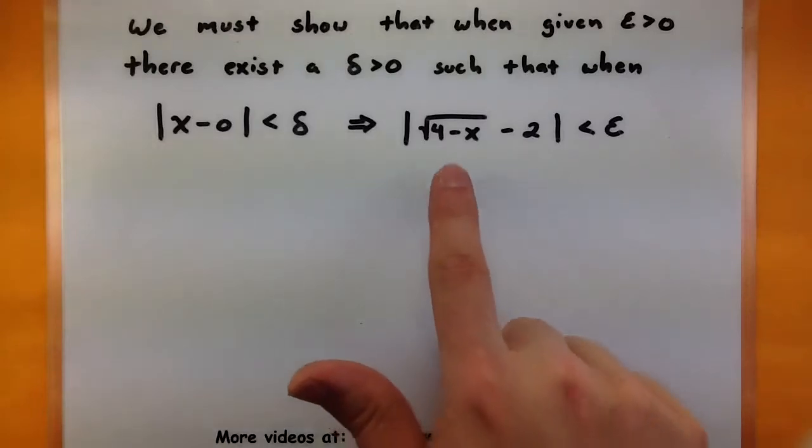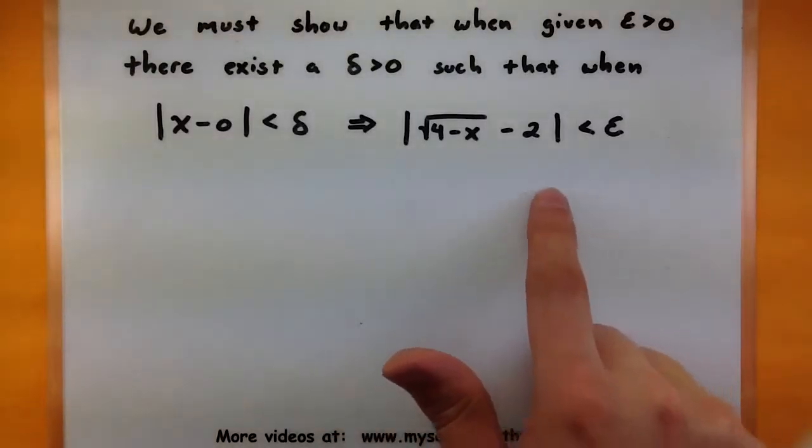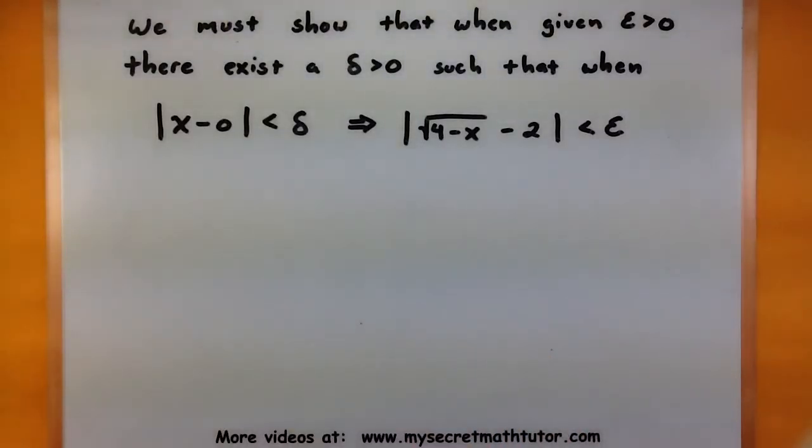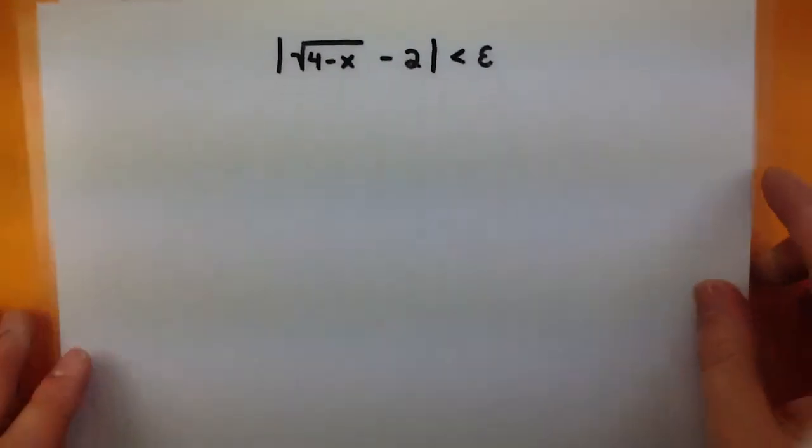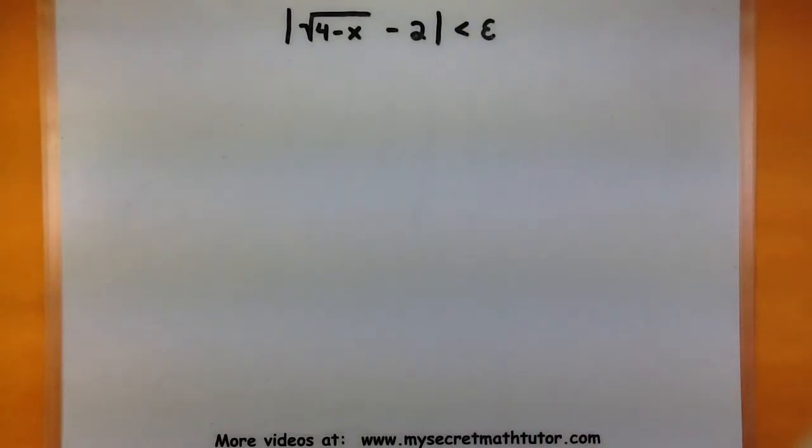Now for these, we start with our epsilon side, we work our way backwards to see what we need to make delta. So I've extracted out that part of the definition, and we're basically going to work with this and try and solve it for x.